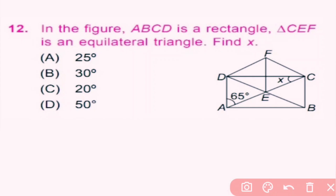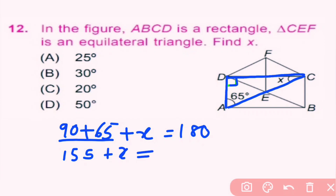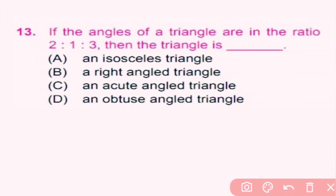Question 12. In the figure, ABCD is a rectangle and triangle CEF is an equilateral triangle. Find x. Since ABCD is a rectangle, this angle is 90 degrees. Taking triangle ADC: 90 plus 65 plus 65 is 155, and 155 plus x equals 180, so x equals 180 minus 155, which is 25 degrees. A is the correct answer.